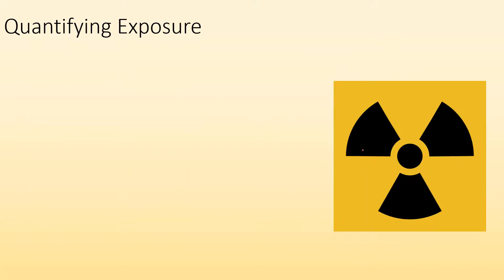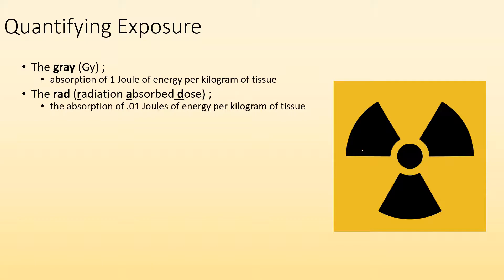So how do we quantify exposure? How do we put a number to how much we've been exposed? First unit we're going to talk about is the gray. It's the absorption of one joule of energy per kilogram of tissue. There's also the rad, which is short for radiation absorbed dose. It's the absorption of 0.01 joules of energy per kilogram of tissue. So if we do a little math, how can we compare the gray to the rad? One gray is 100 rads. So 100 rads gives you one gray.